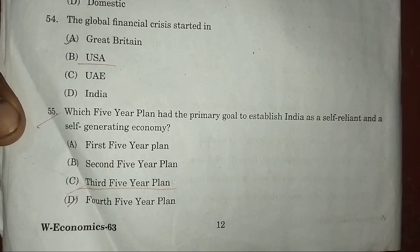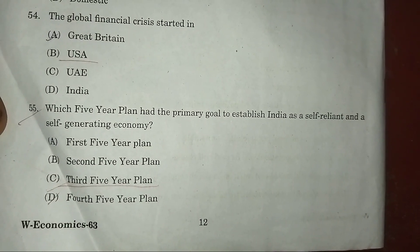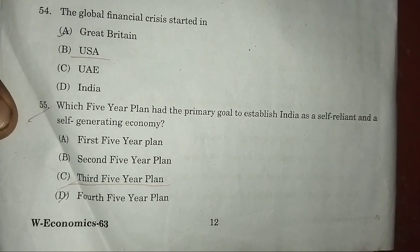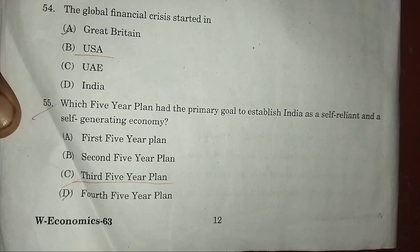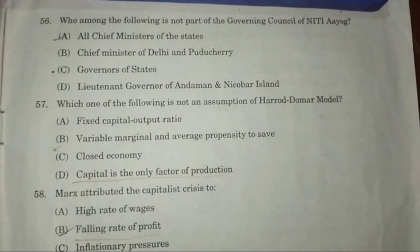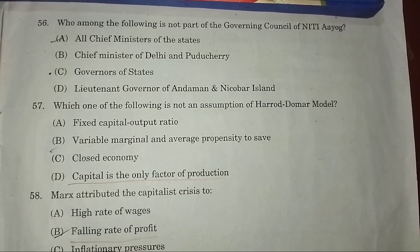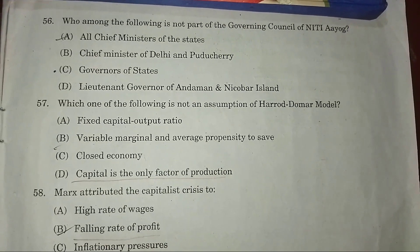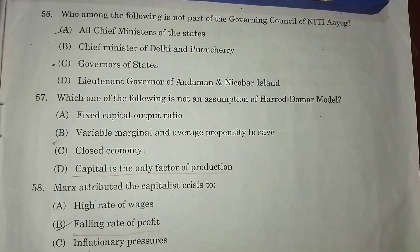Question 55: The Five-Year Plan whose primary goal was stability and making India a self-reliant and self-generating economy — answer: C — the Third Five-Year Plan. Question 56: Who among the following is not part of the Governing Council of NITI Aayog? Answer: C — governors of states.